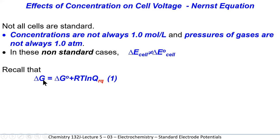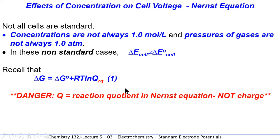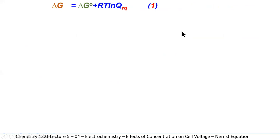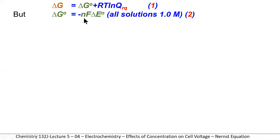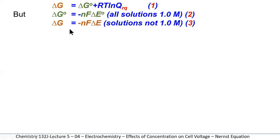We're going to look at a couple of equations from our past, where we know that delta G under non-standard conditions can equal delta G under standard conditions plus RT times the ln of Q. Be careful — this Q is not charge, but it represents the reaction quotient, where we have the concentration of products divided by the concentration of reactants following the laws of mass action. Delta G-naught equals minus NF times the voltage under standard conditions, and delta G equals minus NF times delta E.